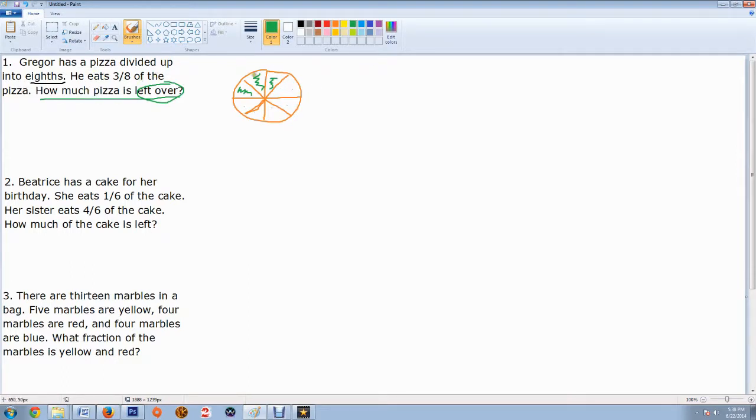So when we have a whole pizza, we have eight out of eight pieces total. So we start out with eight-eighths of the pizza. He's going to eat, which means he takes away three-eighths of the pizza. How much is left over? Well, we know when we add and subtract with fractions, if the denominator is the same, we don't have to do anything. We just put that there at the end. It doesn't change.